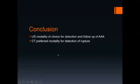In conclusion, ultrasound is the modality of choice for detection and follow-up of abdominal aortic aneurysm. CT is the preferred modality for detection of rupture.